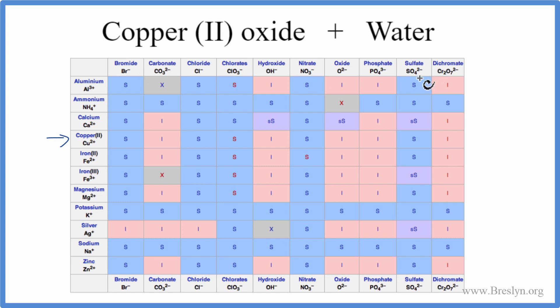And then across the top, the negative ions, we're looking for oxide right here. So we go down here to where they cross, and we see that there's an I there. That I means that copper 2 oxide is insoluble in water.